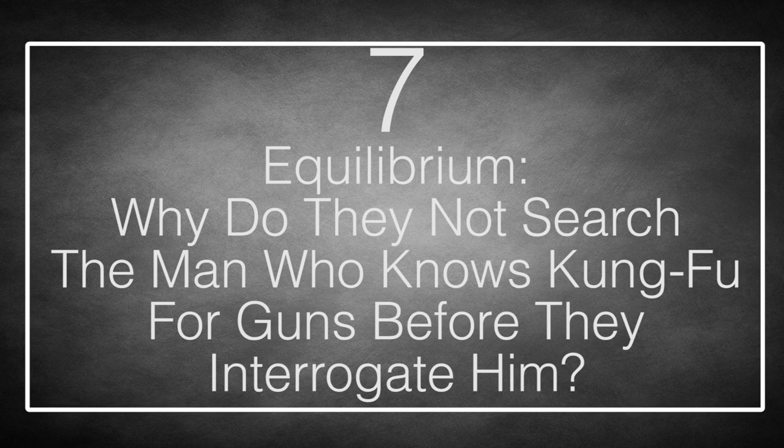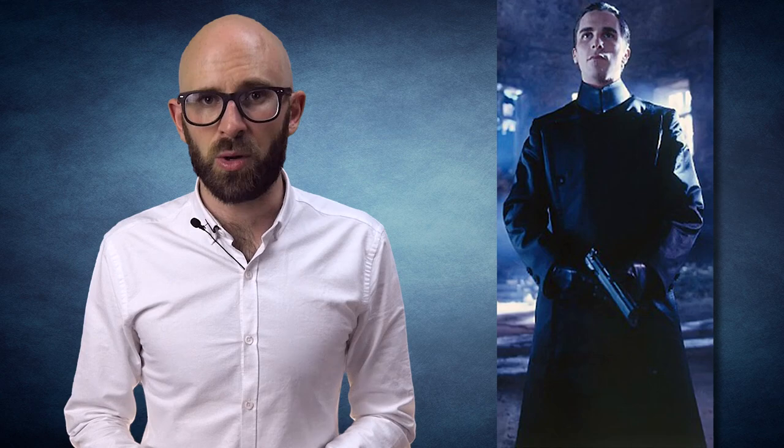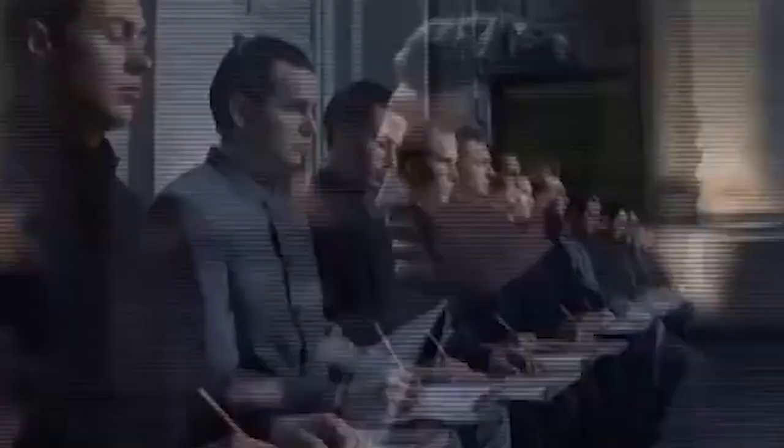Number 7: Equilibrium – Why don't they search the man who knows Kung Fu for guns before they interrogate him? In Equilibrium, Christian Bale plays the role of a cleric, a future peacekeeper trained in the ancient art of Gun Kata. Through analysis of thousands of recorded gunfights, the cleric has determined that the geometric distribution of antagonists in any gun battle is a statistically predictable element. Basically, if Christian Bale has a gun, the odds of your testicles being shot is increased by about 80%.